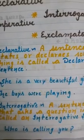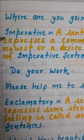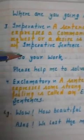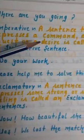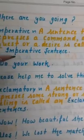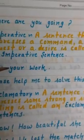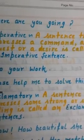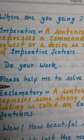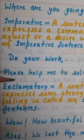Sentences that express command, request, and desire are called imperative sentences. For commands: 'Do your work', 'Go there', 'Come here.' For requests: 'Please give me a glass of water', 'Please shut the door.' These are imperative sentences.